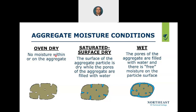In practice, an aggregate pile sitting outside can never truly be oven dry — we're always somewhere between oven dry and SSD. If it rains heavily or the aggregate sits underwater, we're between SSD and wet. The only way to achieve oven dry is to literally put the aggregate in an oven.